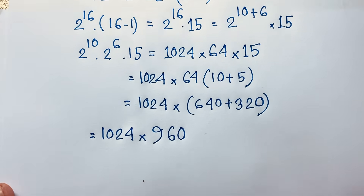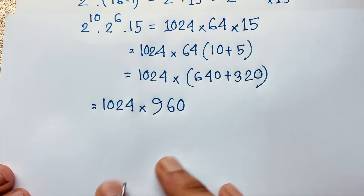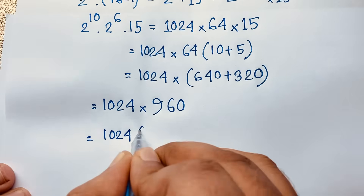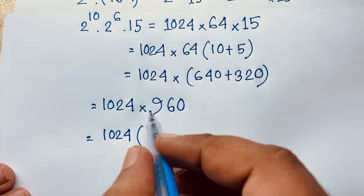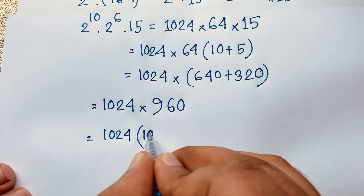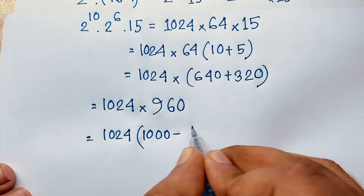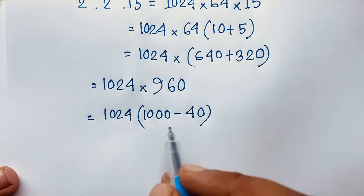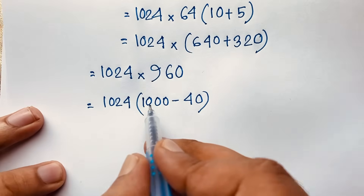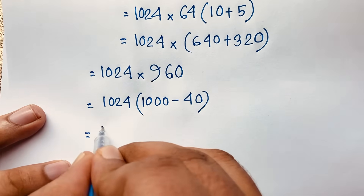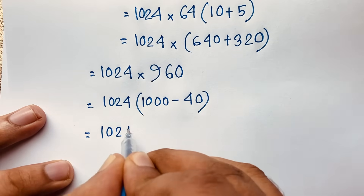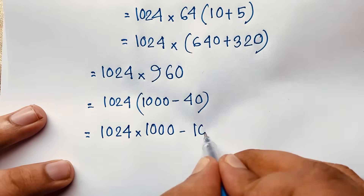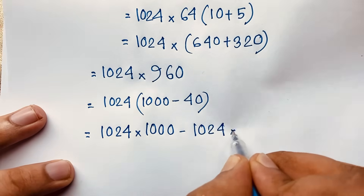How to calculate 1024 times 960 without a calculator? I write 960 as 1000 minus 40. So 1024 times 960 equals 1024 times 1000 minus 1024 times 40. That gives 1,024,000 minus 40,960.